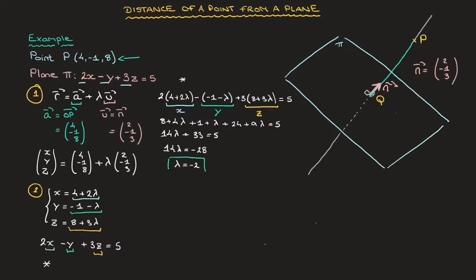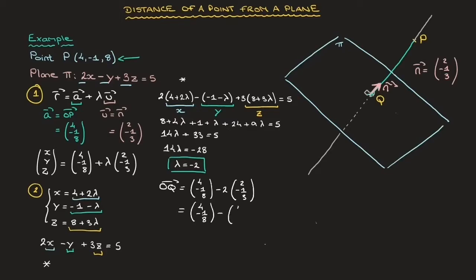The value of λ at point Q is -2. Substituting λ = -2 into the vector form of the line equation: OQ = (4, -1, 8) - 2(2, -1, 3) = (4, -1, 8) - (4, -2, 6) = (0, 1, 2). We now have the position vector of point Q, and we can state its coordinates: Q = (0, 1, 2). That's Step 2 done.